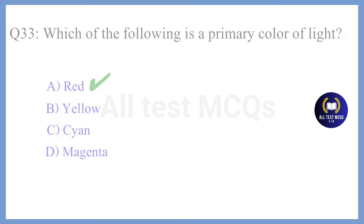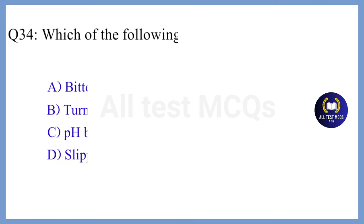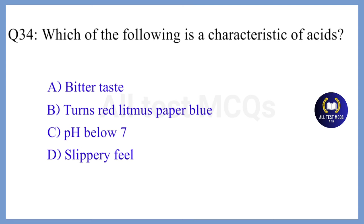Question 34. Which of the following is a characteristic of an acid? The correct answer is Option C. pH below 7.